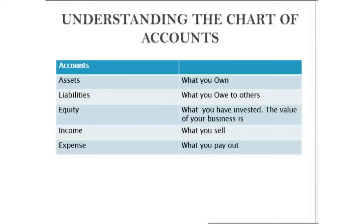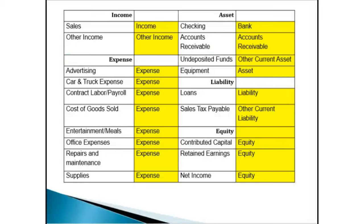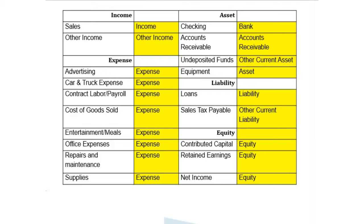We have five main account types: assets, liabilities, equity, income, and expense. Under the five main accounts, we can have sub-accounts. For example, if we want our transactions to display as an advertising expense, then we have an advertising account. Or if it's supplies. We can do this with all five accounts. One quick tip: you want to avoid classifying transactions under miscellaneous or using expense accounts as bank accounts. You don't want to miss any tax deductions.